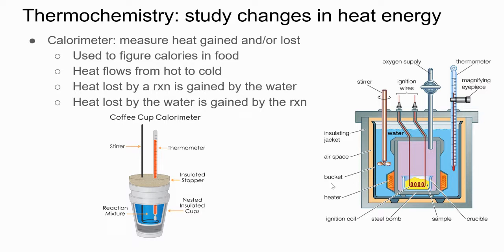Remember that heat flows from the hot thing to the cold thing. So when we look at our calorimeter, whatever substance is hot is losing the energy and the thing with a colder temperature is absorbing that energy. This is one way that we determine the calories of food, because calories are a form of energy.